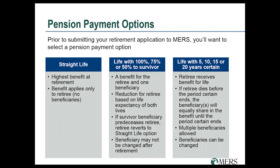The next set of options — life with 100%, 75%, or 50% to your survivor beneficiary — allows you to name one survivor beneficiary who would also be eligible for a lifetime benefit. If you pass away, your survivor beneficiary continues to receive pension payments each month. With 100% to survivor, those payments are the exact same amount you had been receiving. With 75% or 50% to survivor, your payments while living are a bit higher, but your survivor then receives only 75% or 50% of that amount.